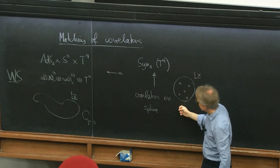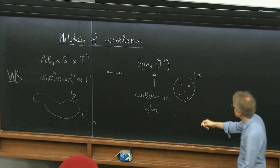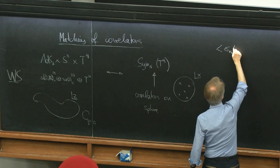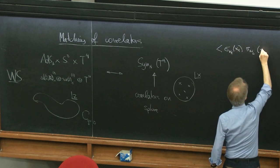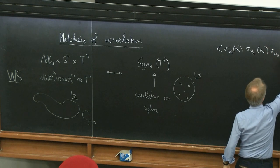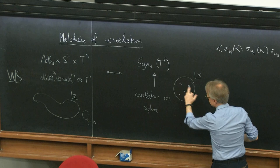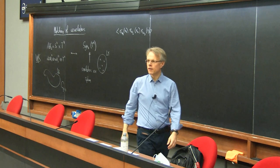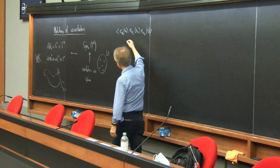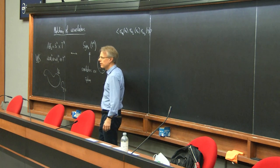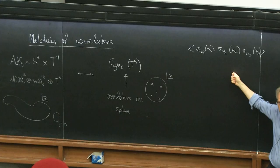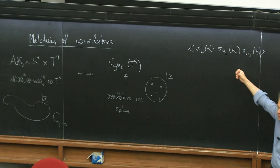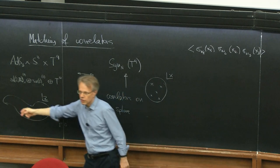We're looking at sphere correlators of twisted sector states in the symmetric orbifold theory. The simplest case is a three-point function at points X1, X2, X3 on the sphere, where each insertion is the twisted sector ground state in the W1, W2, W3 cycle twisted sectors. That's the sort of thing we are going to calculate in X-space, in the symmetric orbifold. I want to first explain how you calculate this correlator in the symmetric orbifold, irrespective of ADS, and then relate it to a calculation in the worldsheet theory.